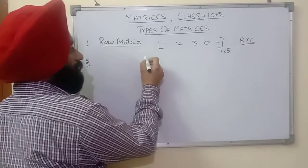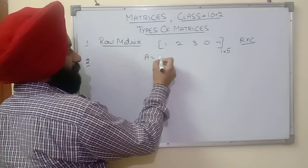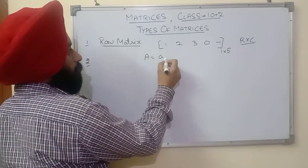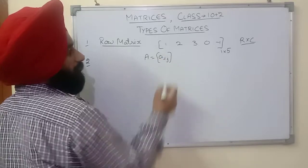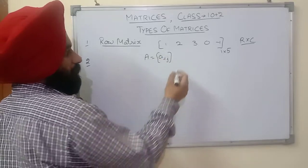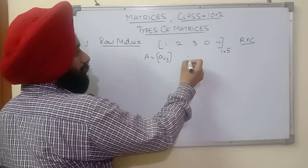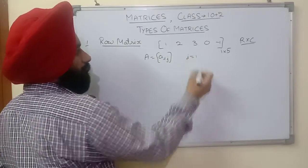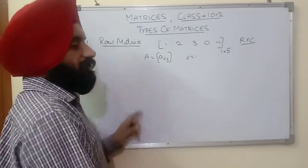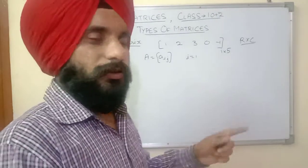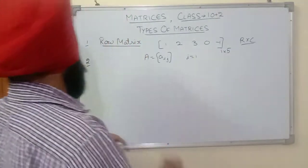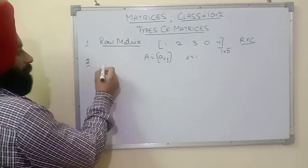If B is a row matrix whose element is represented by A_ij, and i equals 1, that means there is only one row. Next is the column matrix.